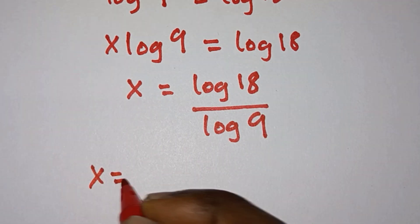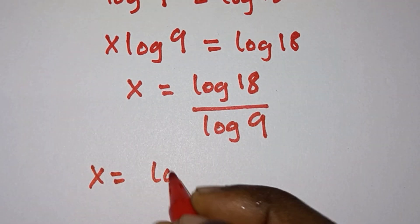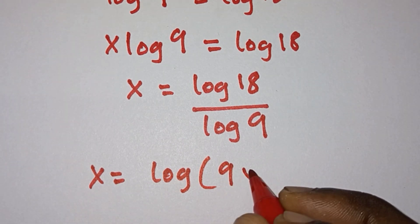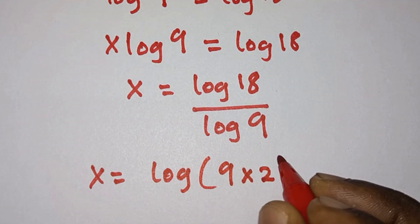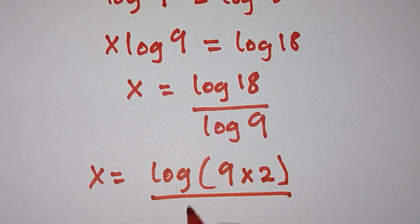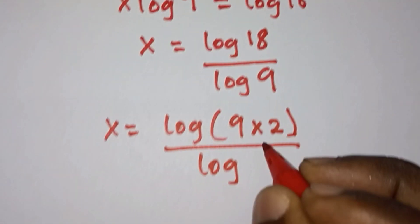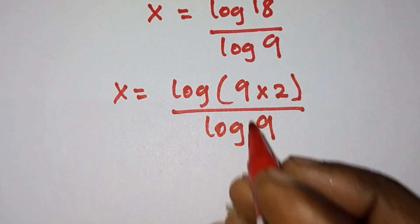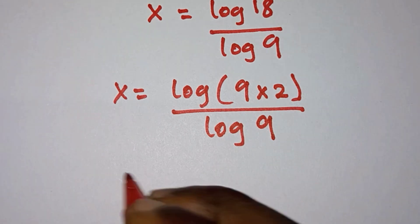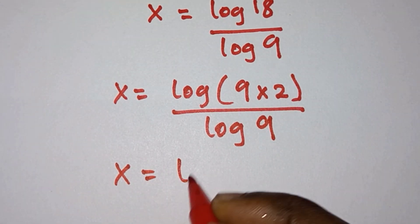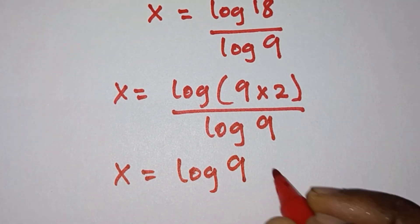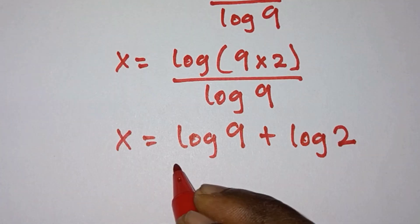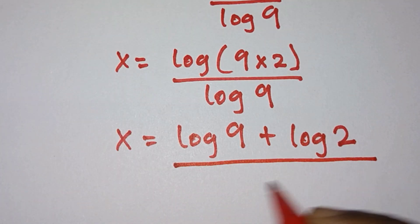So we're going to have x is equal to log of 9 times 2, all divided by log 9. And we can rewrite this as x is equal to log 9 plus log 2, all divided by log 9.